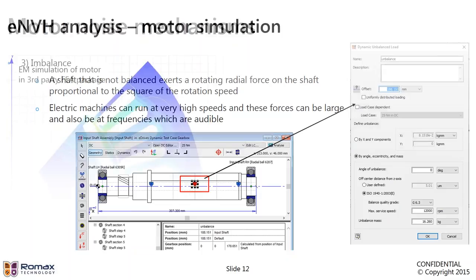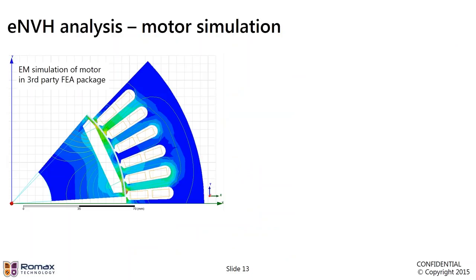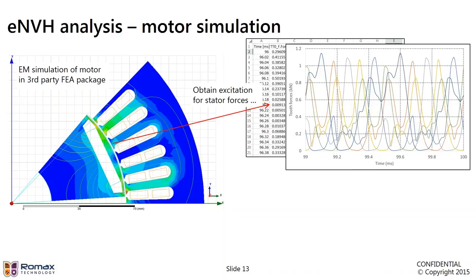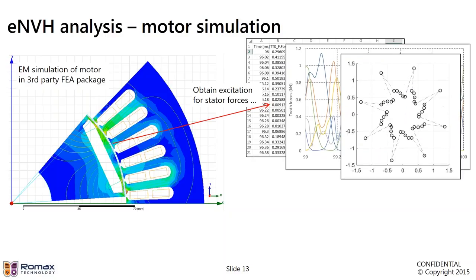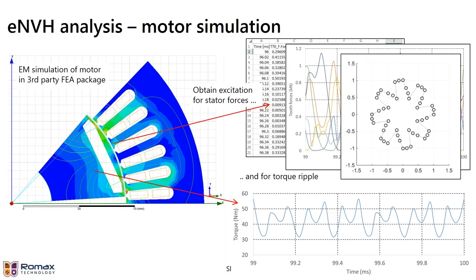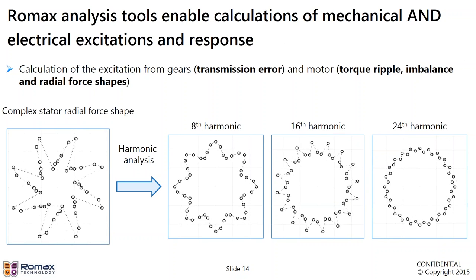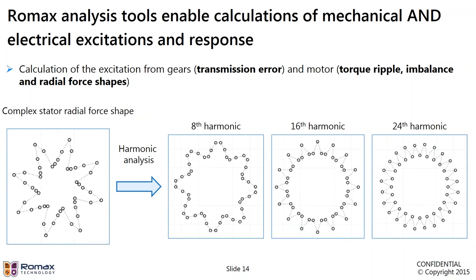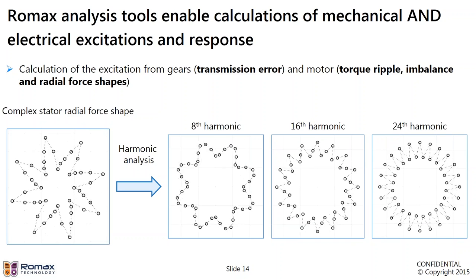The way we apply this, you would simulate the electric machine in a third-party FEA package in order to obtain the excitations. So the radial stator forces and the torque ripple. Once we've obtained these, we can bring them into the ROMAX model and apply them through the new capability. And therefore, we can include it in our NVH analysis alongside the transmission error from the gears. It is a frequency domain solution. So the radial force excitations are broken down into harmonics. As you can see here, the overall excitation is broken down into these three harmonics.